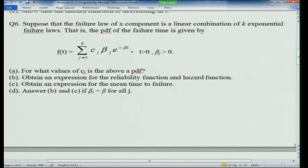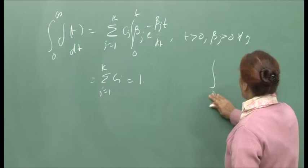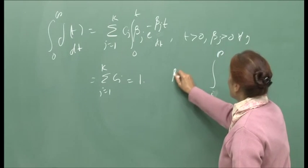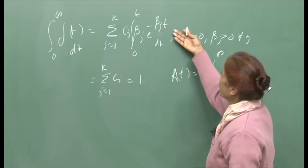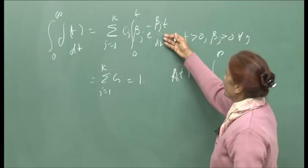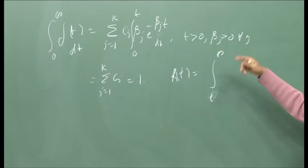For Question 6, obtain expressions for the reliability function and hazard function, and the mean time to failure. Since it is a summation, the reliability r(t) will be the convex combination: c1·r1(t) + c2·r2(t) + ··· + ck·rk(t). The mean time to failure E(T) = Σ(j=1 to k) cj/βj. Answer parts (b) and (c) assuming βj = β for all j.